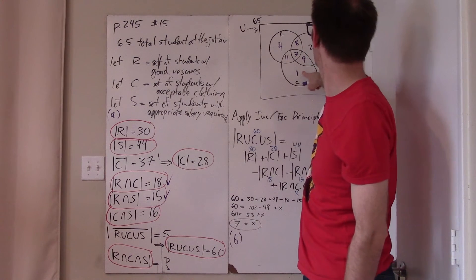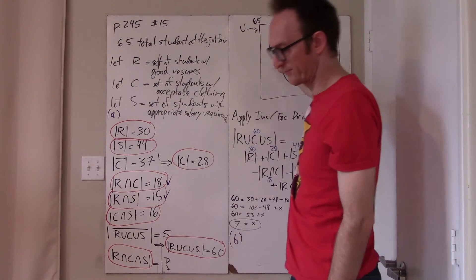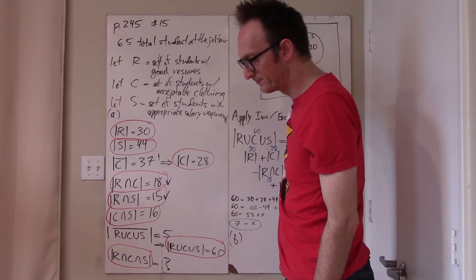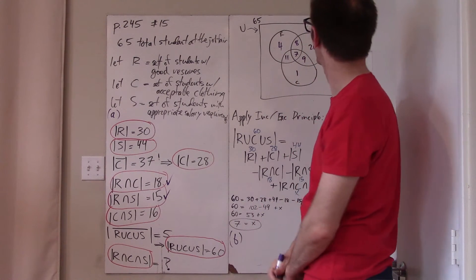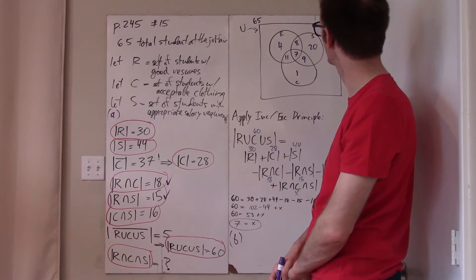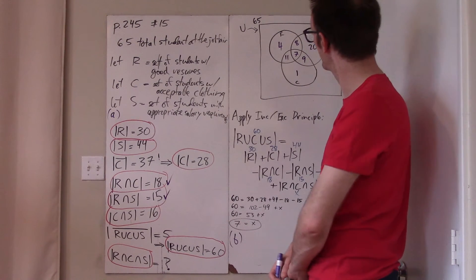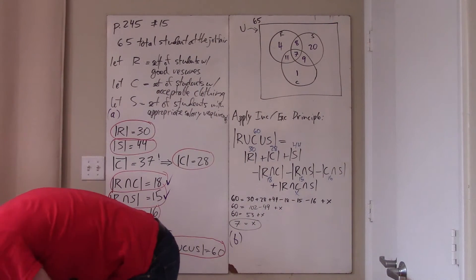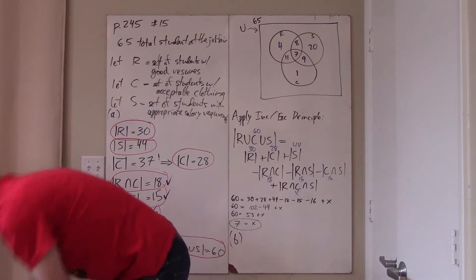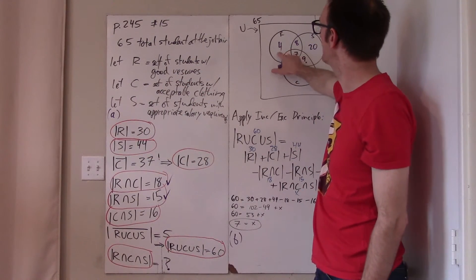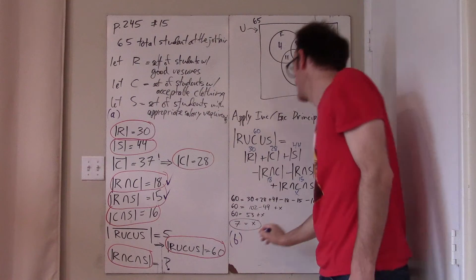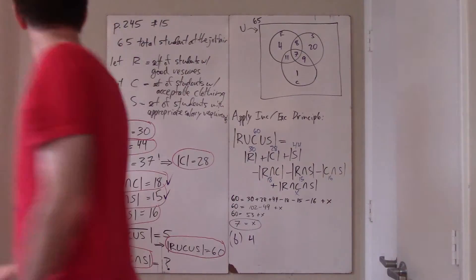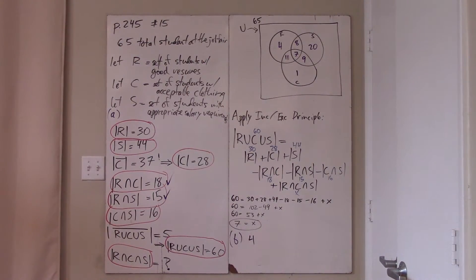So that's four people. If you failed the other two it means you did not have a good salary and did not have good clothing, but you did have a good resume. So that's four people.